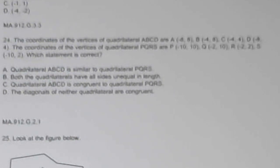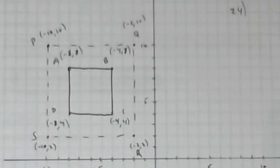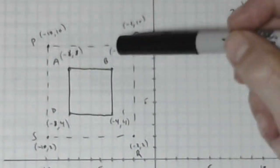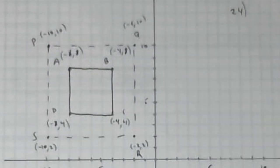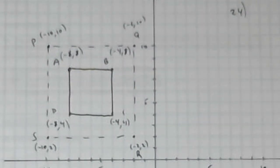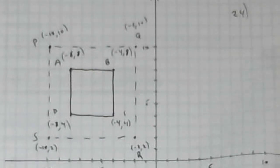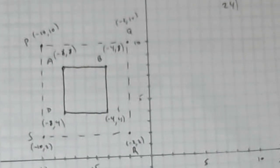Number 24 reads the coordinates of the vertices of quadrilateral ABCD are A(-8, 8), B(-4, 8), C(-4, 4), D(-8, 4). And it gives us the vertices of quadrilateral PQRS: P(-10, 10), Q(-2, 10), R(-2, 2), S(-10, 2). Which statement is correct? Well, that's what this is, A, B, C, D, and the dashes are P, Q, R, S. So what I get are two squares, basically. That's really graphically all I need to solve this question.